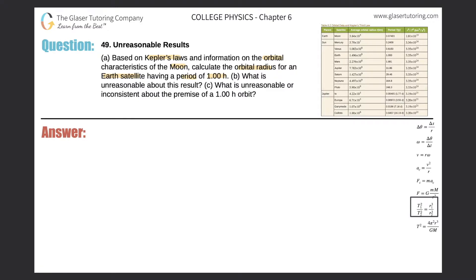Alright, so we're going to use the formula down here. This is Kepler's third law. So this talks about periods and radii of two satellites that orbit the same parent system or the same planet. So here I'm going to be talking about the orbital period of the moon squared, divided by the orbital period of the satellite squared, should equal the radius of the moon cubed divided by the radius of the satellite cubed.